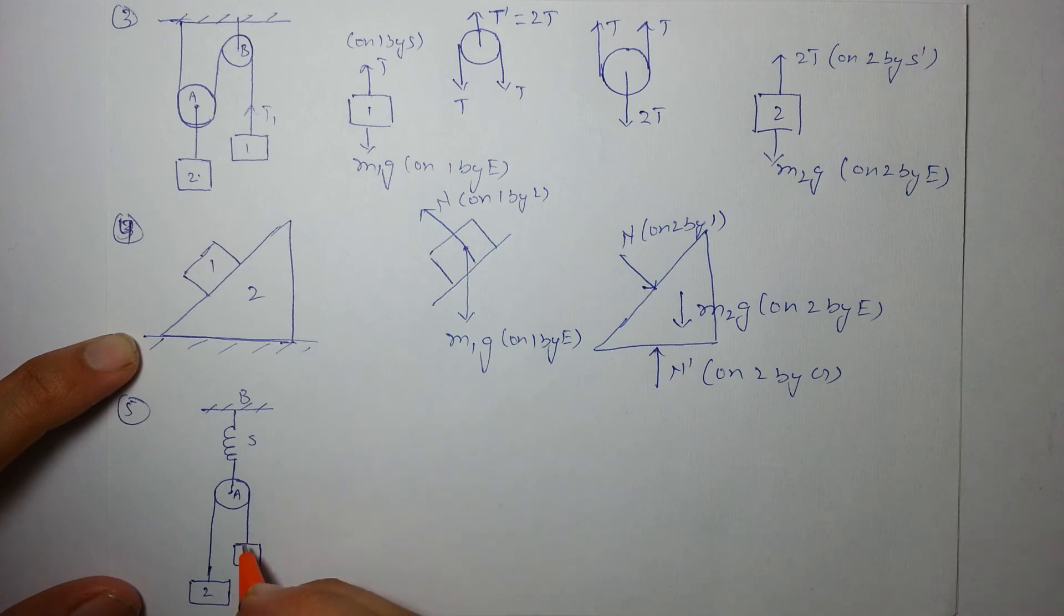The last FBD is this, for one I can draw it here only. This will be t and this will be t, here downward force m1g, here downward force m2g.